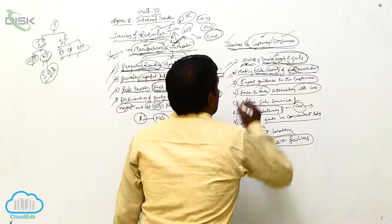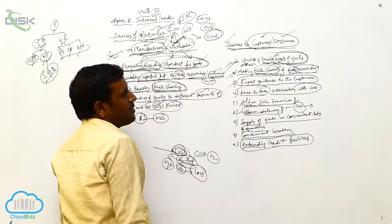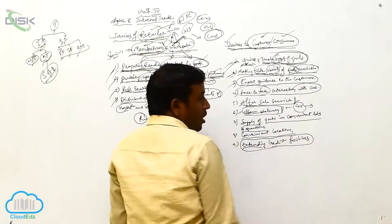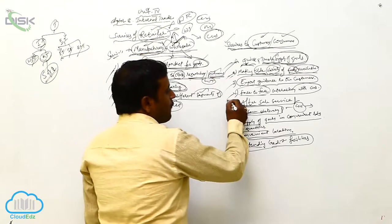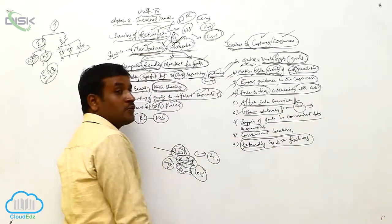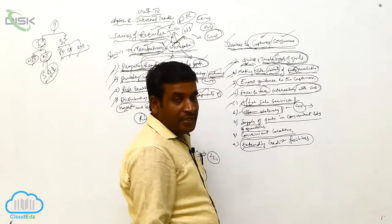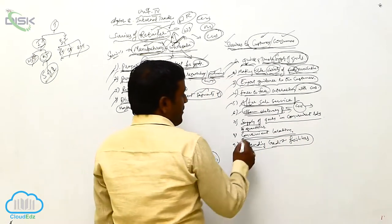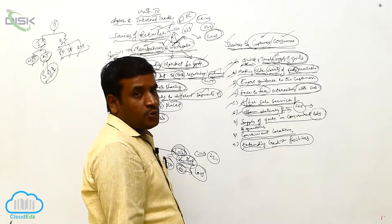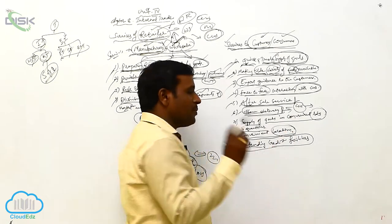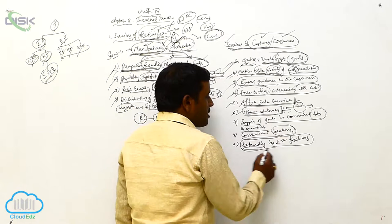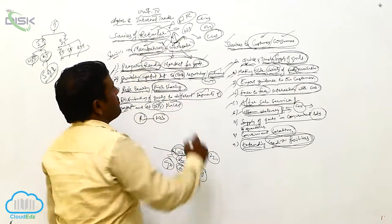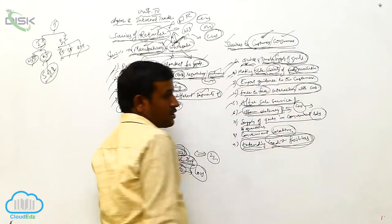So, these are the services to the customers or consumers by the retailer: quick and timely supply of goods; making a wide variety of goods available; expert guidance to the customer; face-to-face interaction with the customer; after-sale service; home delivery — done only by the retailer, not the wholesaler or manufacturer; supply of goods in convenient lots; convenient location; and extending the credit facility. This is the topic — services of the retailer to the wholesaler and the customers.